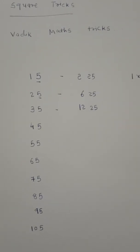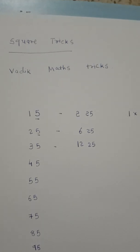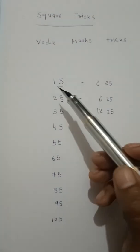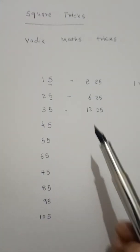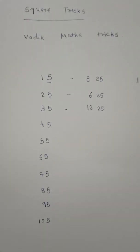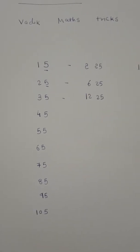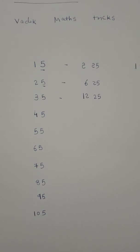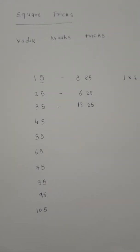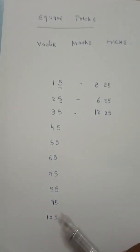In this video, today we learn Vedic math tricks. The trick is about squares. Here you can see 15, 25, 35. Common is their last digit is 5. When we want to find squares of these types of numbers, we use a magical trick. Here the last figure is 5.